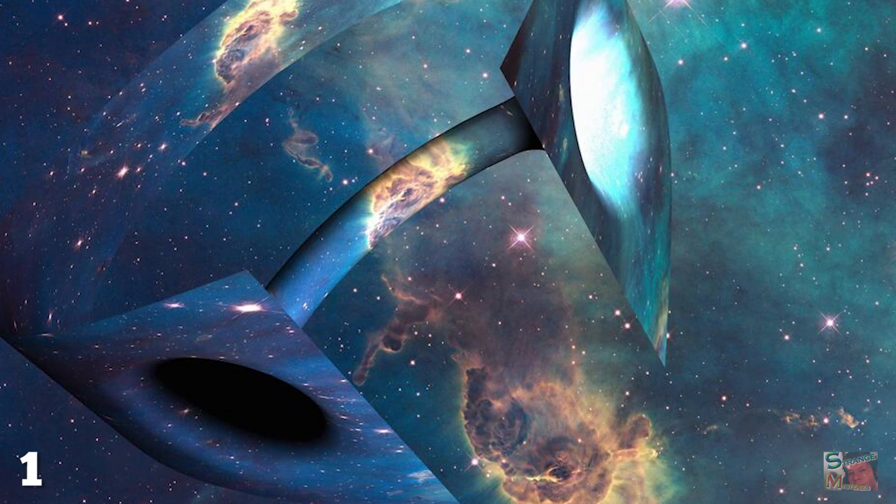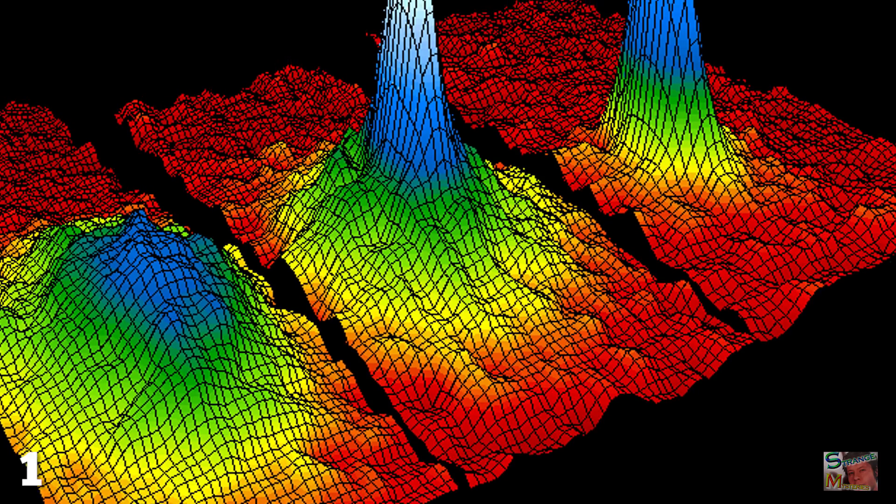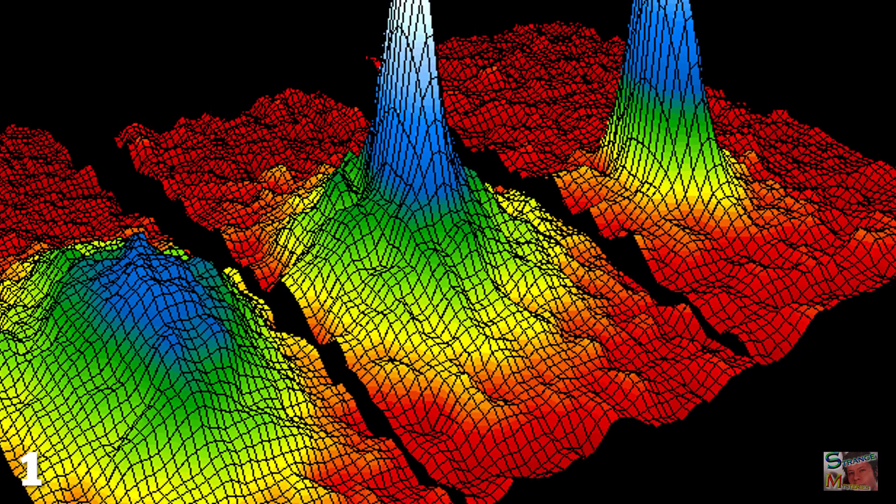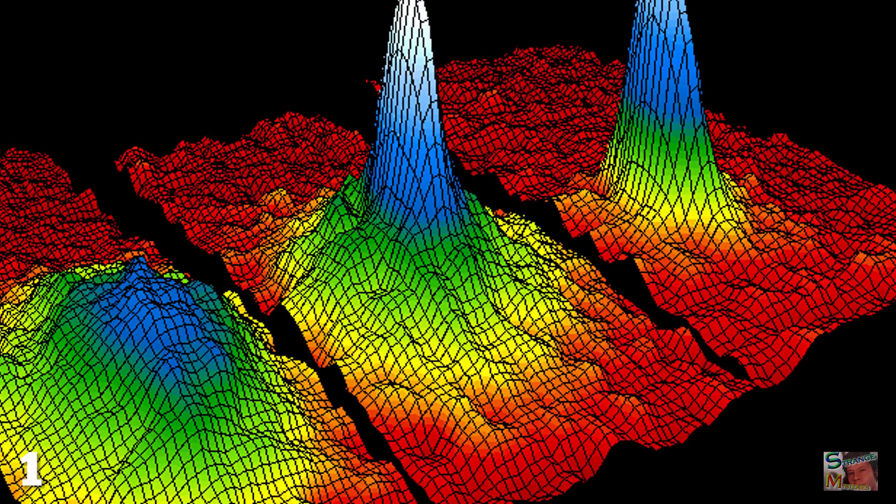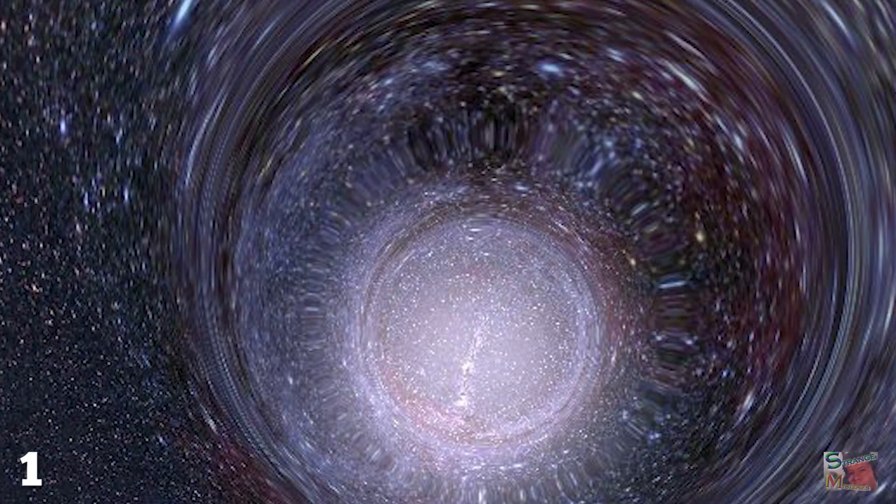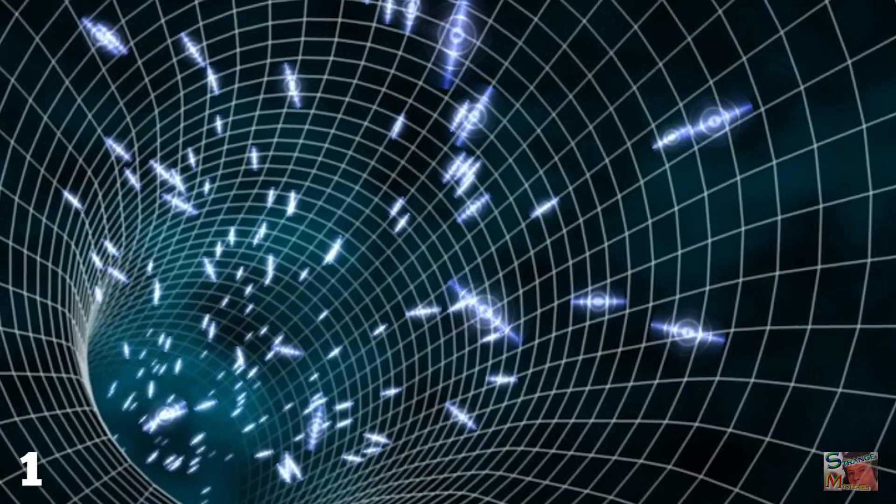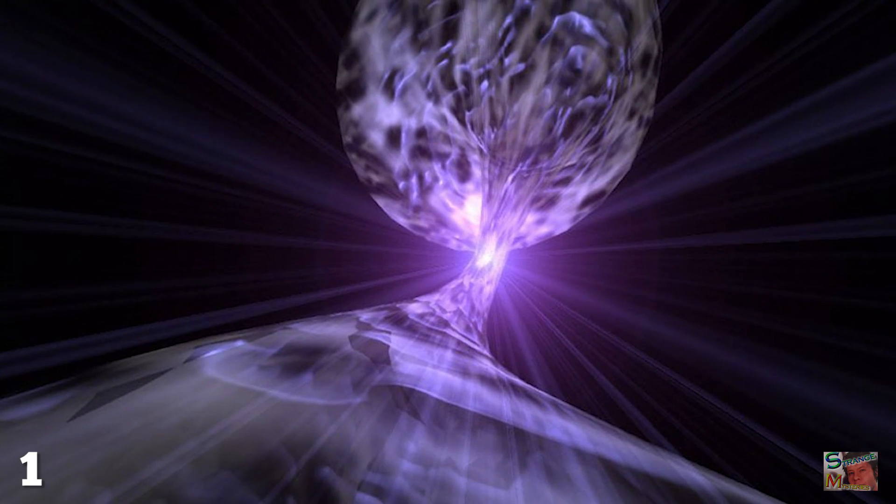And at number 1, The Wormhole Machine. If the negative mass fluid created back in April 2017 proves to act as we think it should, then we might be able to build a wormhole after all. Or, at the very least, rip open one side of a wormhole whose point of exit is unknown and which might expand beyond our control.